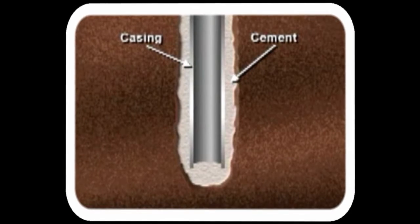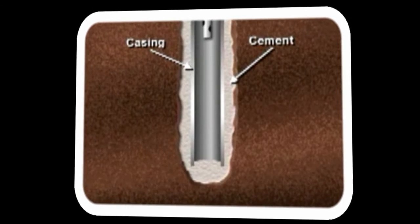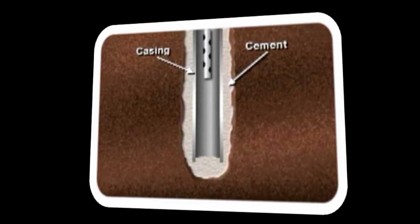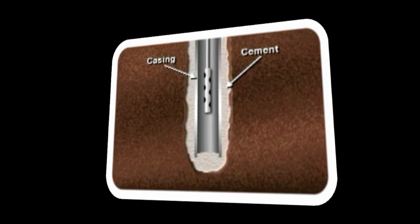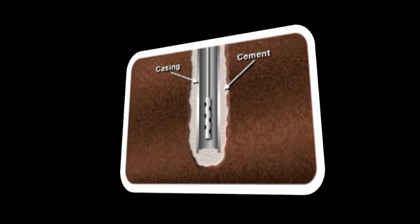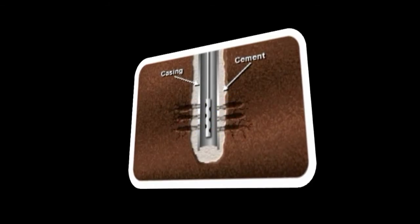Holes must be made in the casing. This process, known as perforating, is achieved by lowering into the hole an instrument that sets off explosive charges that fire bullets through the casing and into the rock.